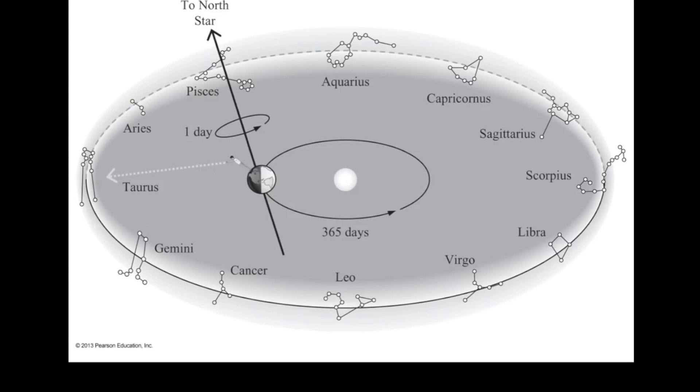This is a diagram that comes from the lecture tutorial on seasonal stars. And what we're seeing here is the Earth, a person, not to scale, standing on the Earth, the axis and orientation of the rotation of the Earth shown. We also have the Sun and the Earth's orbit. And then, surrounding that, we've got the stars representing the zodiac.